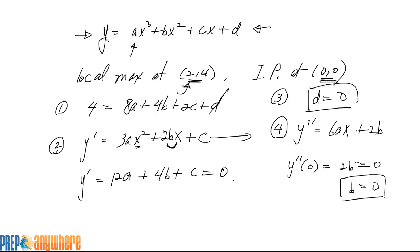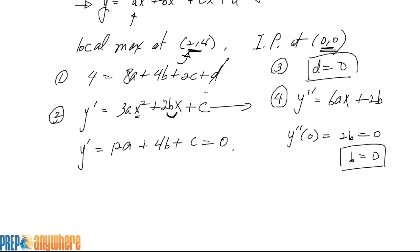We have two information already. So let's replace both in these equations, both b and d to be 0. And we get, from equation 1, we get 8a plus 2c is equal to 4. From equation 2, 12a plus c is equal to 0.